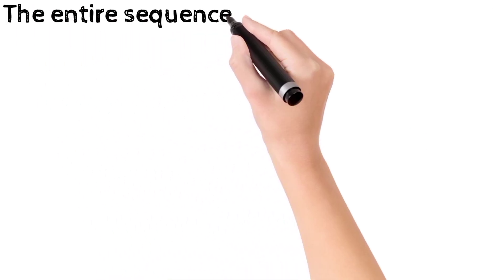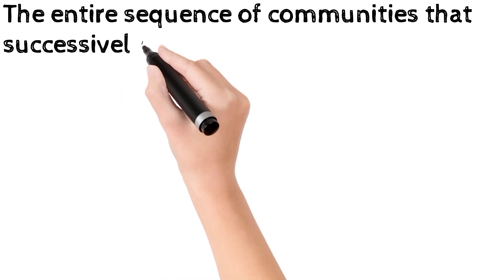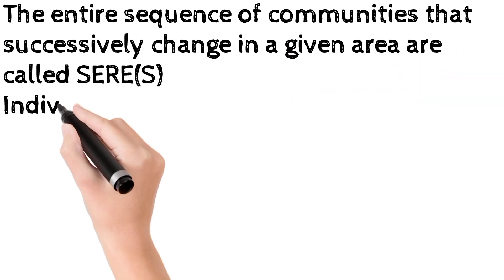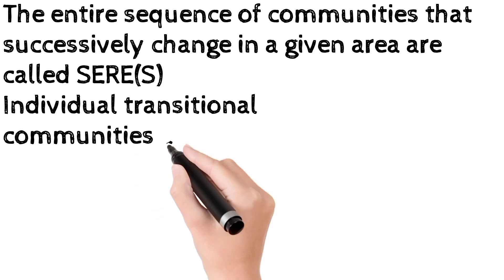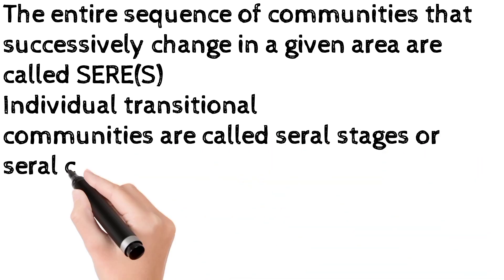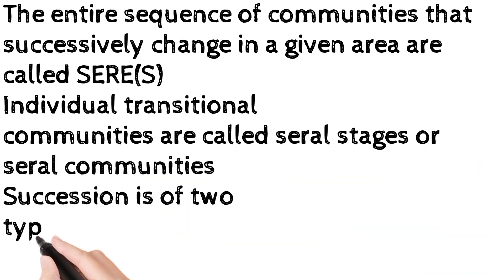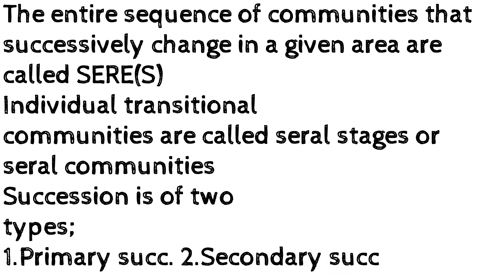In these changes there are different communities. The entire sequence of communities that successfully change in a given area are called seer. Individual transitional communities are called serial stages or serial communities.